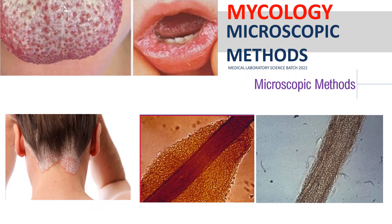If calcofluor white is not available, then we can use your Wood's lamp using ultraviolet light. With the Wood's lamp, ectothrix will fluoresce, while endothrix infection will not fluoresce. The positive result is fluorescence — bright green or yellow-green. Take note of this for your quiz or exam.